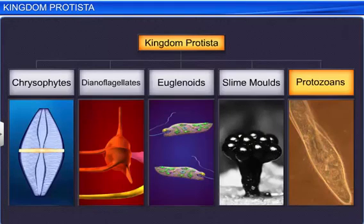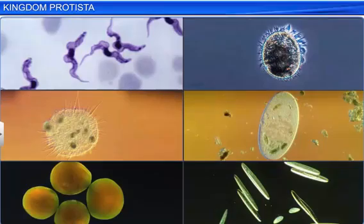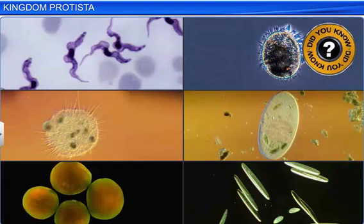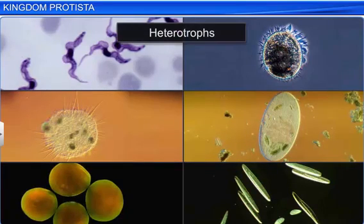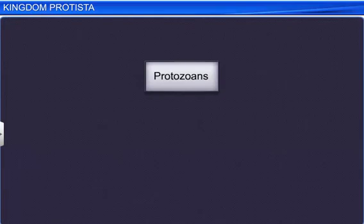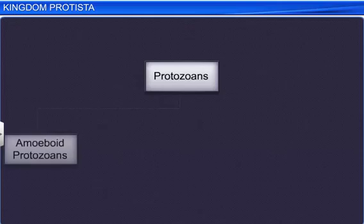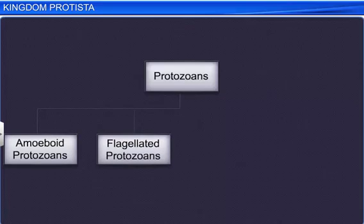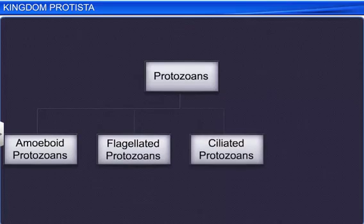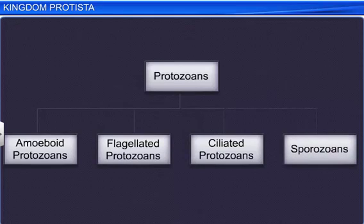Protozoans are protists that are believed to be primitive relatives of animals. The word protozoans means the first animals. All protozoans are heterotrophs and live as predators or parasites. They can be classified into four types: amoeboid protozoans, flagellated protozoans, ciliated protozoans, and sporozoans.